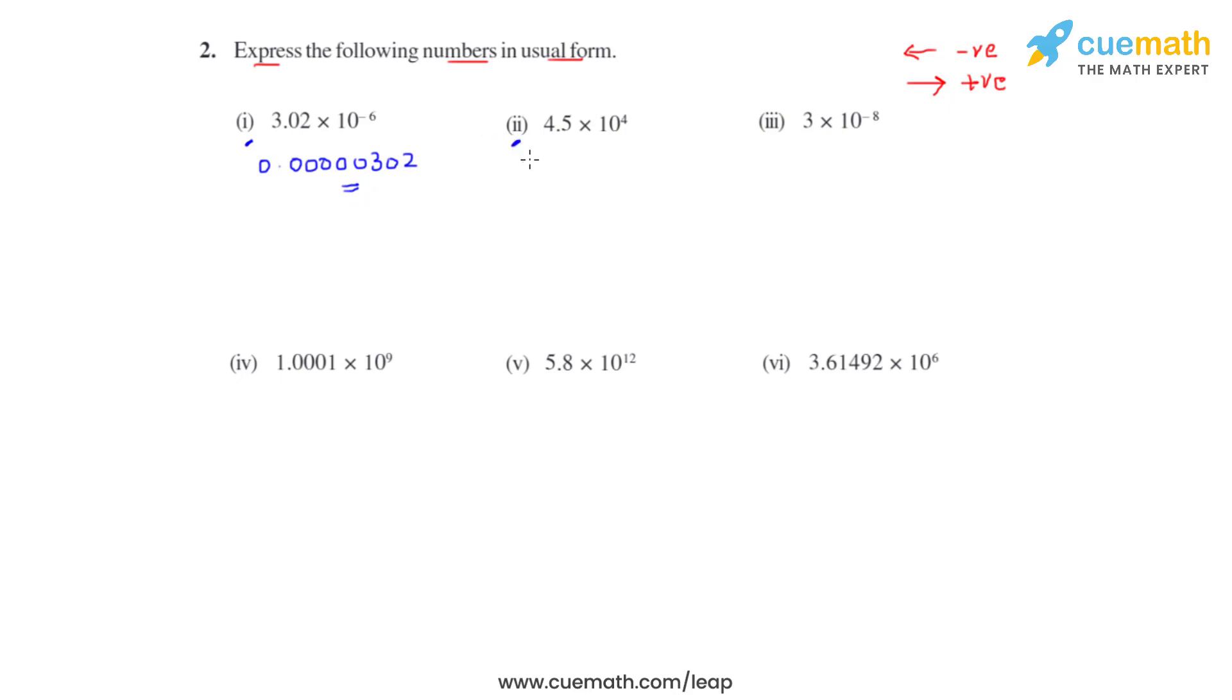Coming to the second bit, we have 4.5 times 10 raised to 4. The power of 10 is positive 4, so the decimal moves four places towards right, and we get 45,000. This is the usual form of the given number in the second bit.